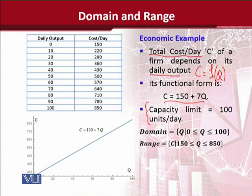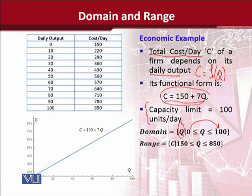This input-output relationship can be expressed in the form of domain. The domain, as you remember, is the set of all permissible values of the independent variable, which in this case is q. So the domain in description form is written as q, where q is from 0 to 100. Using this information, we can find the possible values of the dependent variable — cost — by putting these values into the given function. In the table, daily output is the independent variable and cost per day is the dependent variable.